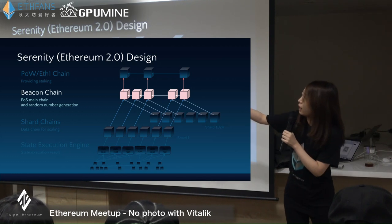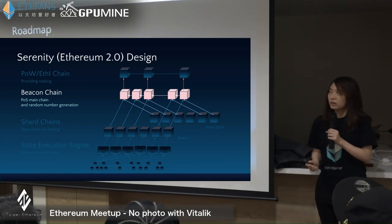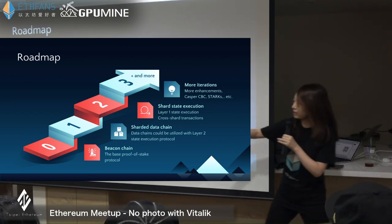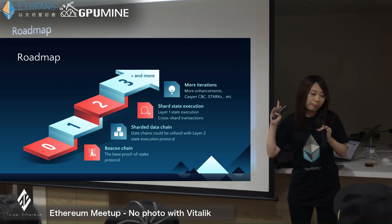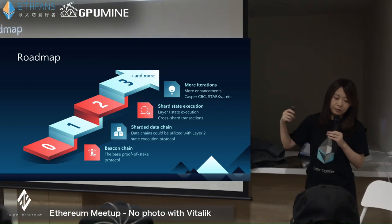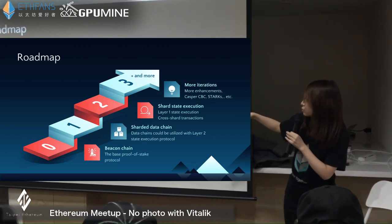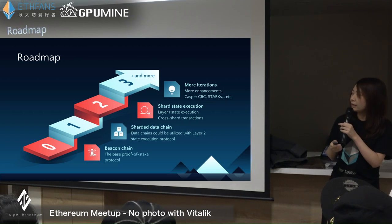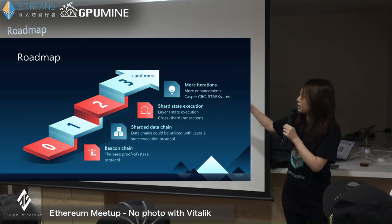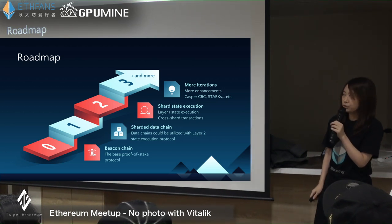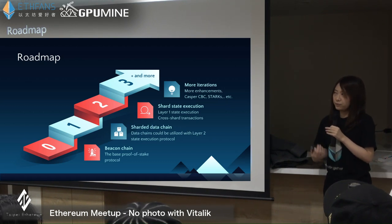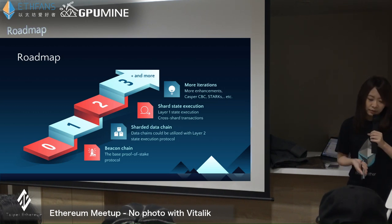Today I'm going to focus on the Beacon Chain. Here's a simplified roadmap overview. We are still at phase 0. For phase 0, everything we're focusing on is the Beacon Chain design and implementation. The shard chains will be in phase 1, and shard chains could be utilized with layer 2, which Vitalik will talk about later. For phase 2, the shard state execution engine will be introduced, along with cross-shard transitions. After phase 2, we assume the base protocol will be fine and useful.